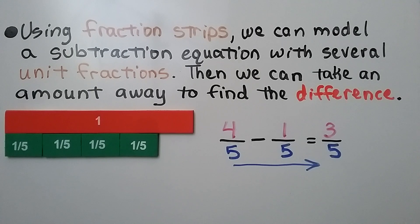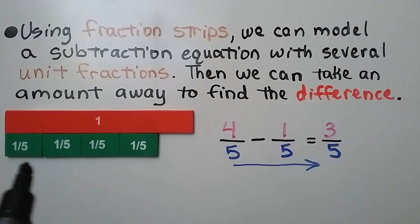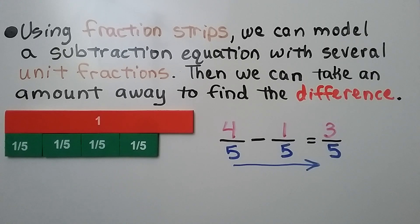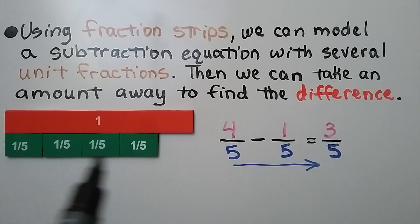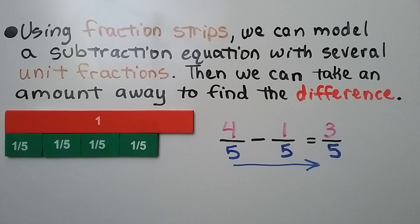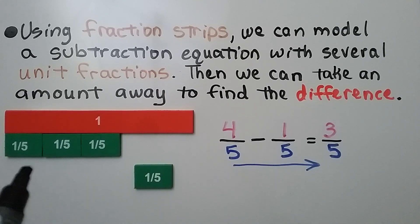Using fraction strips, we can model a subtraction equation with several unit fractions. Unit fractions have a 1 for a numerator. We can take an amount away to find the difference. We have 4 fifths, we need to subtract 1 fifth, and the difference is 3 fifths.